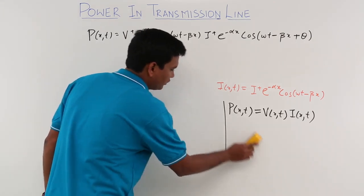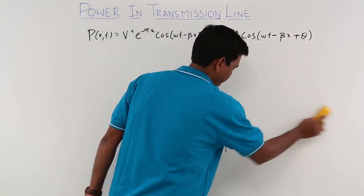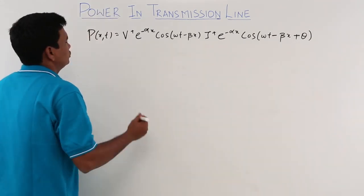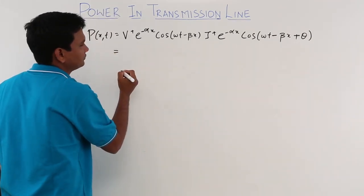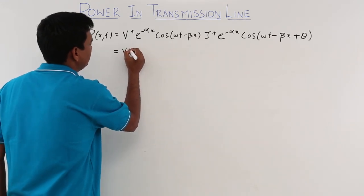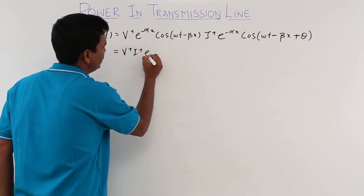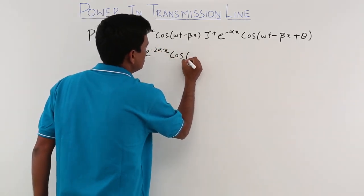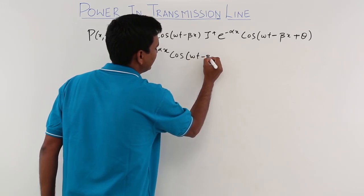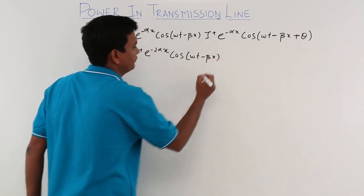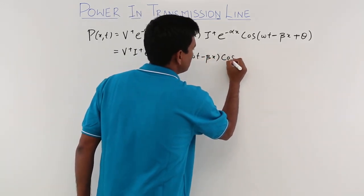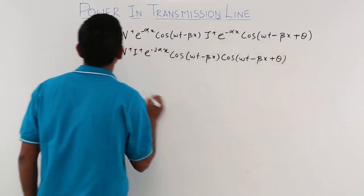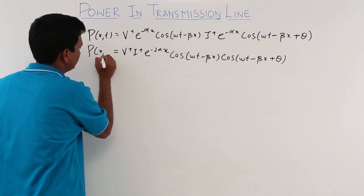Solving the product of voltage and current, the instantaneous power comes out to be p(x,t) = V+ I+ e^(-2αx) cos(ωt - βx) · cos(ωt - βx + θ).